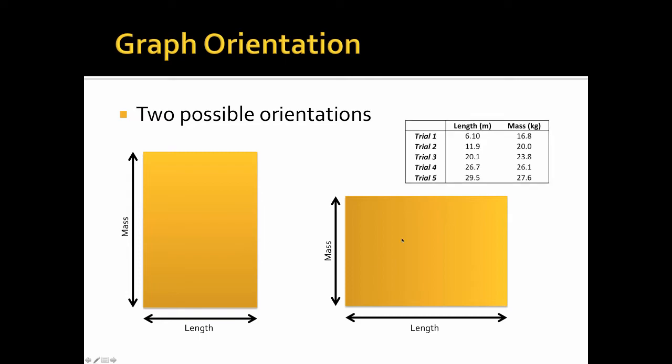And if we look at our data, we can see that our length, it ranges from 6 to 29. That's a difference of about, let's say 25, just to get an idea. And here, our mass, it has a range of 16 to about 28. So that's a difference of about 12.